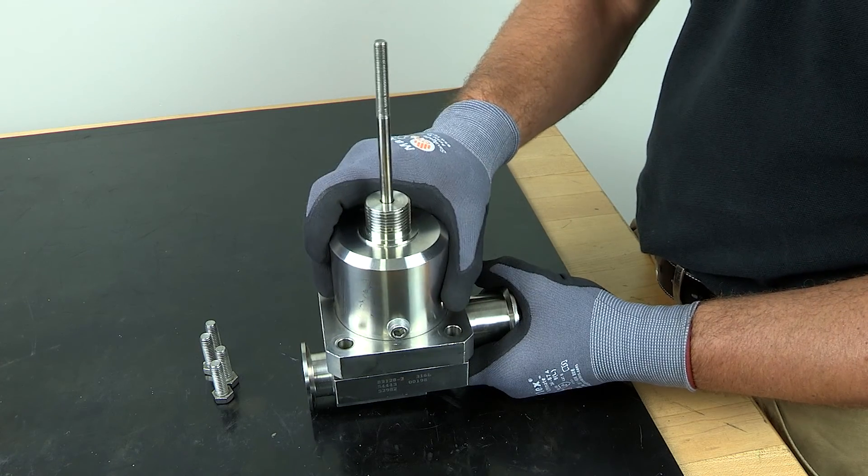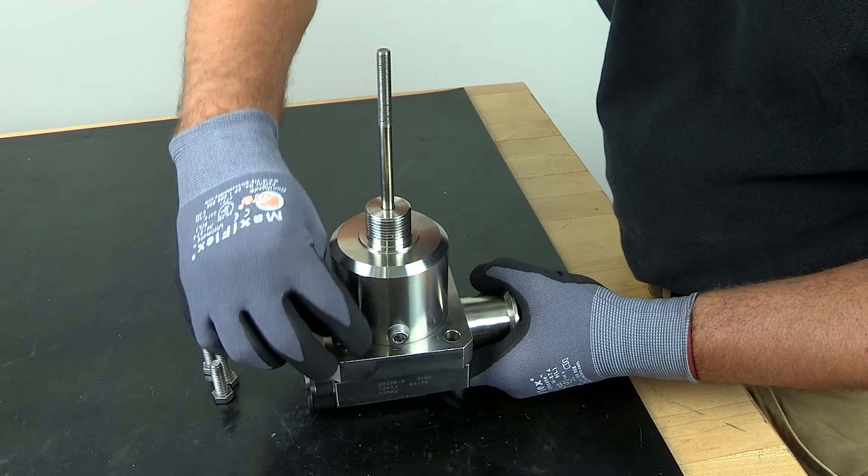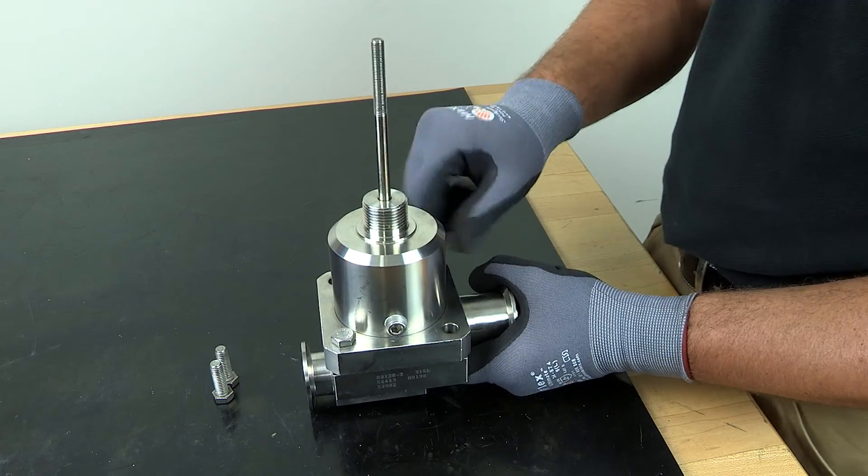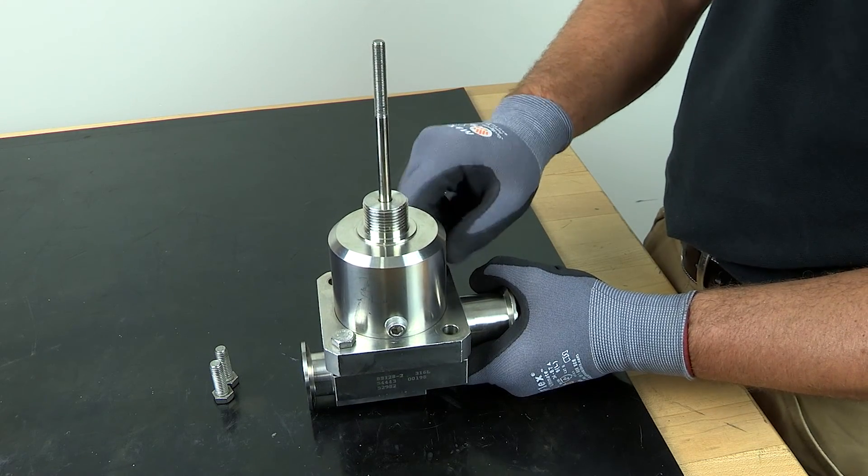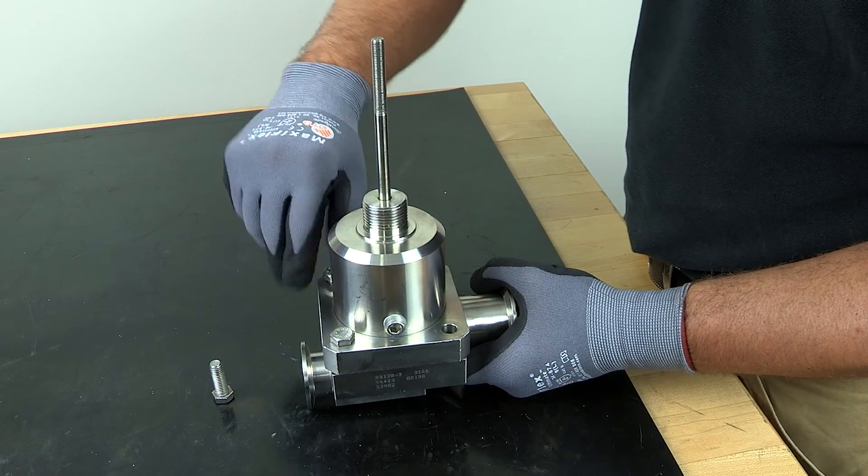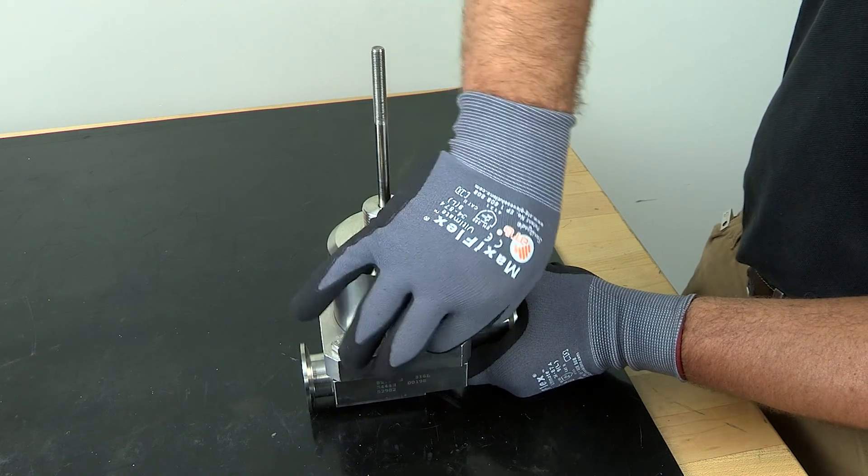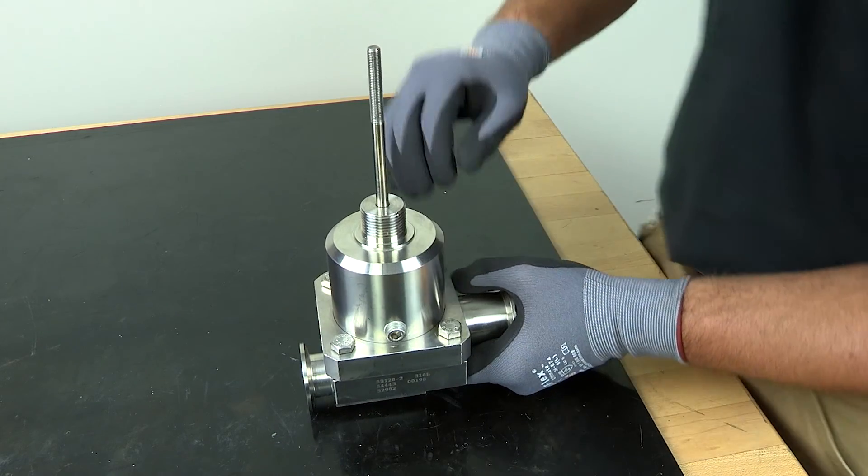With the O-ring and diaphragm in place, the entire assembly can be added onto the valve body. Clamps or a flange are used to attach the bonnet to the body. Make sure you tighten everything evenly to ensure the diaphragm is evenly sealed between the bonnet and body to create an aseptic barrier.